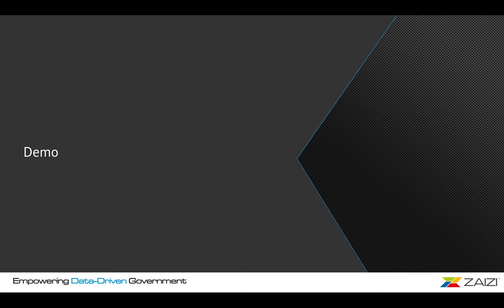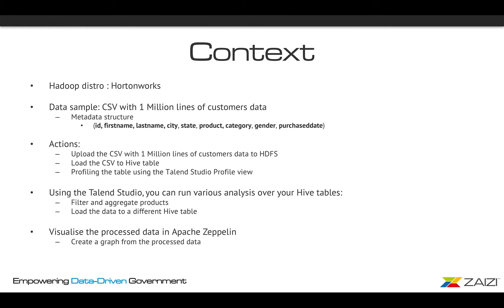For the demo, let me give you a little context. My Hadoop distribution will be Hortonworks. I have a CSV file with one million rows of customer data. The schema of the CSV includes: ID, first name, last name, city, state, product, category, gender, and future state.